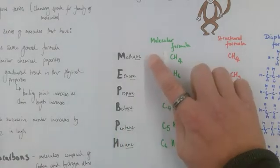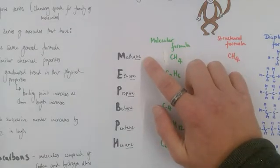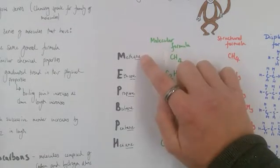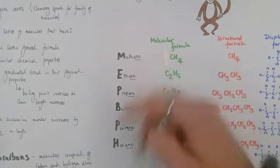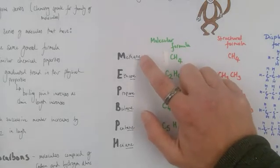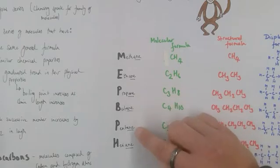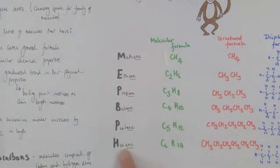The 'ane', the suffix, is the family name or homologous series name of this particular family of molecules. So they're the alkanes. Every member of the family will end in A-N-E because it helps us recognize them as that family. So methane, ethane, propane, butane, pentane and hexane, they're all members of the same family or homologous series.